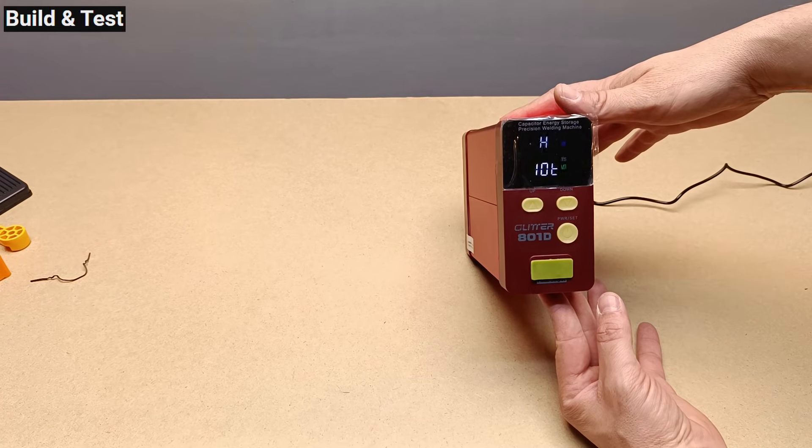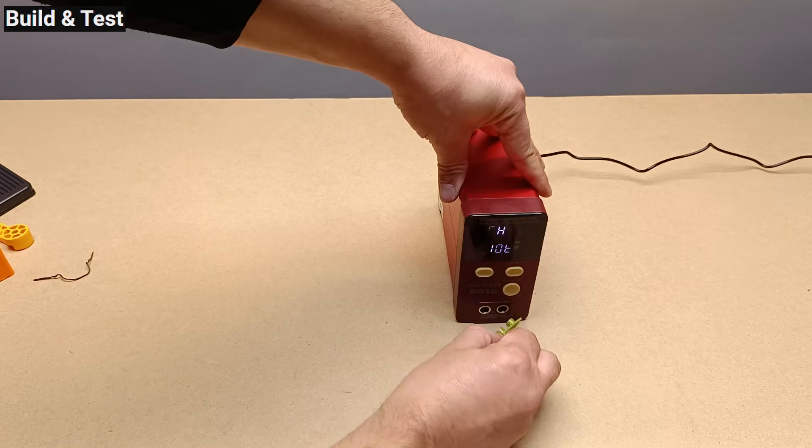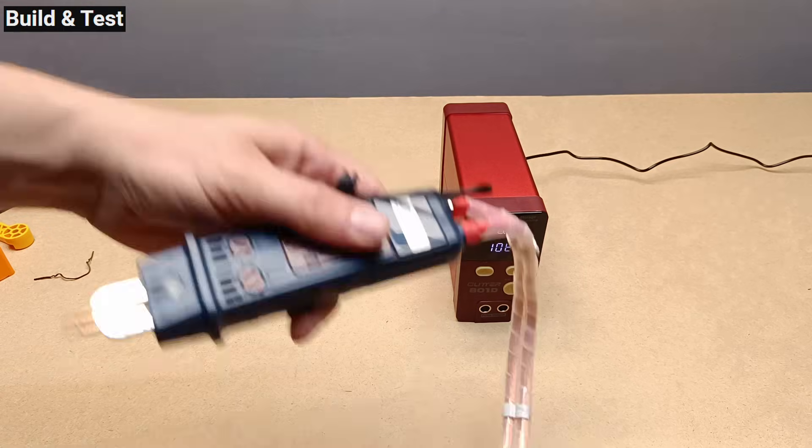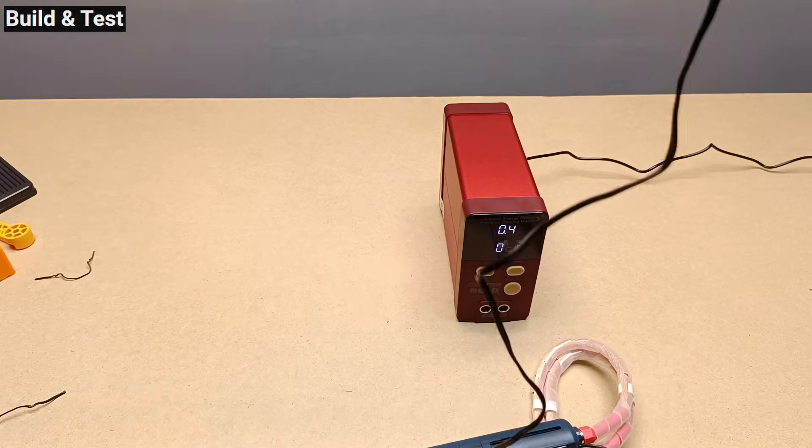Connecting it is very simple. It's practically foolproof. A short press of the button turns on the device, and it begins charging. During this time, you can adjust the welding power to the desired level.